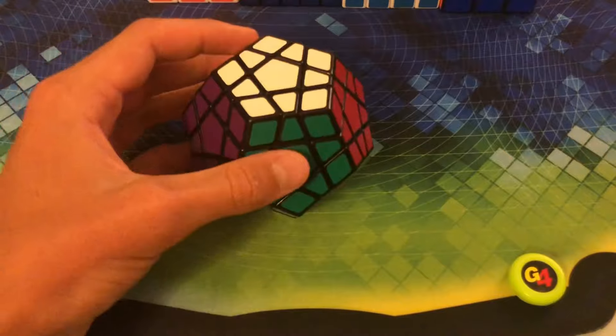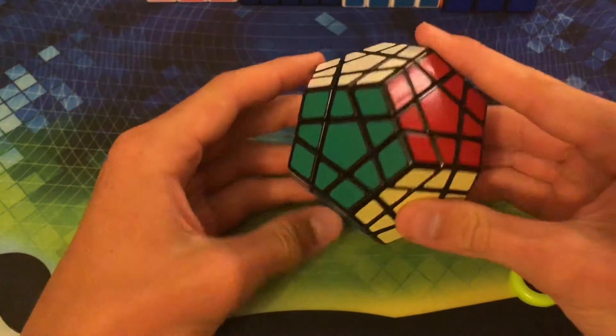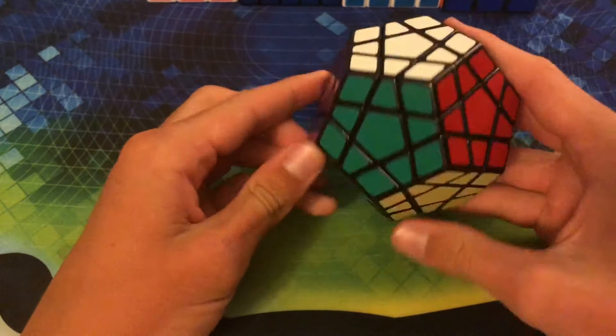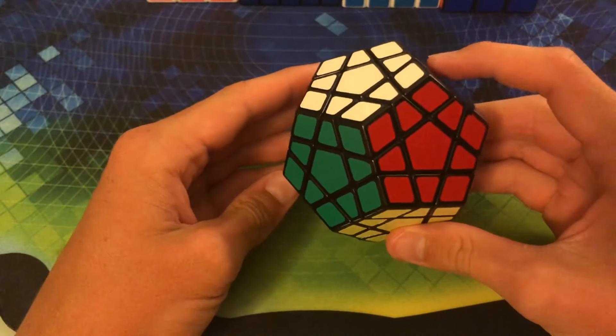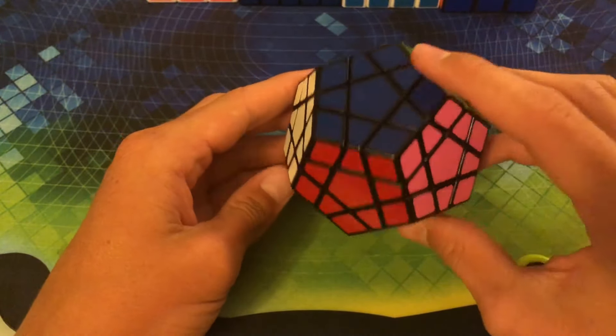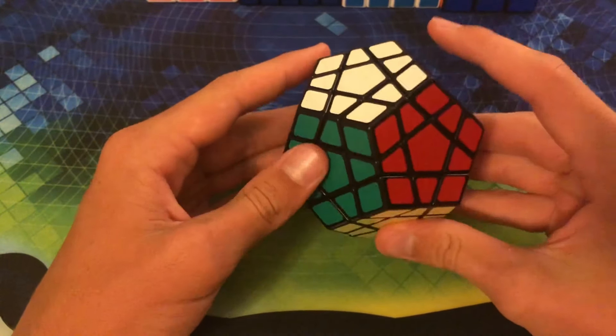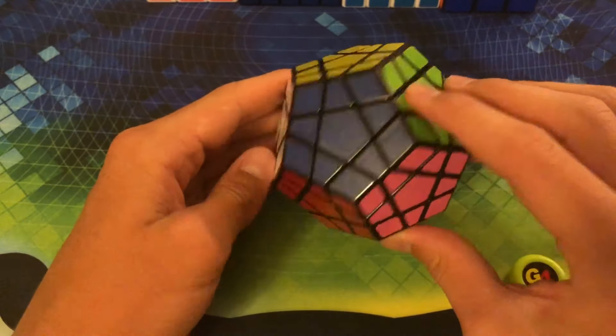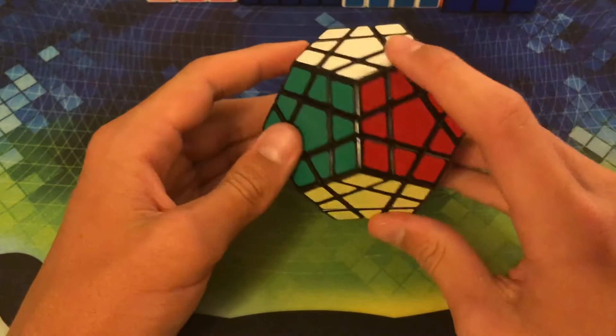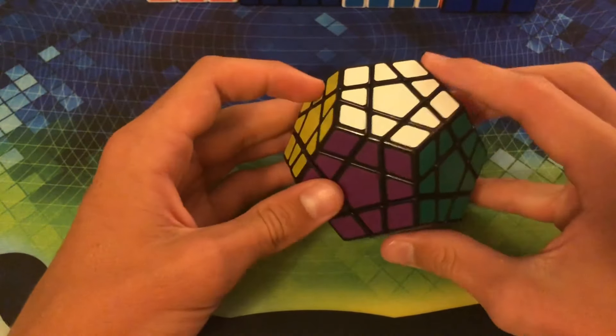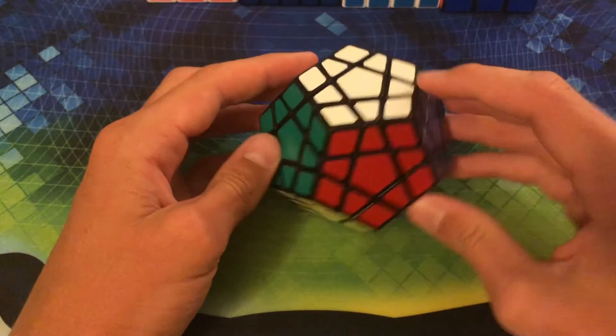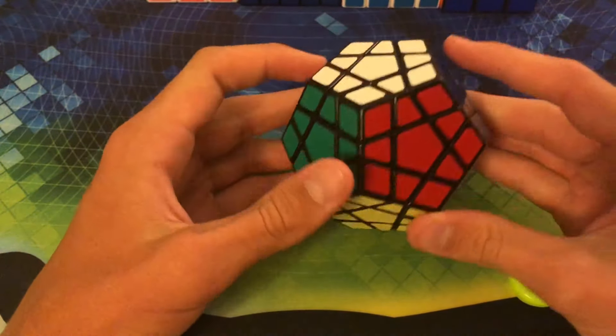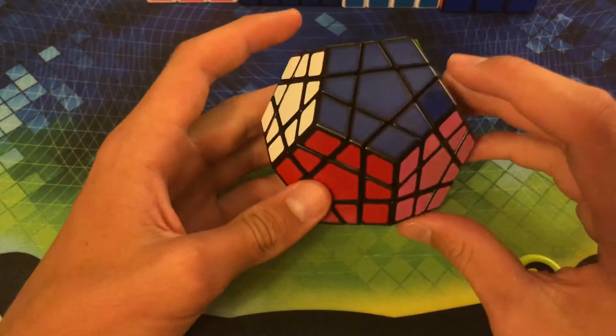We'll start with the fifth oldest cube in my collection, and this is a Shengshou Megaminx. This was gifted to me on Christmas of 2014, so December 2014, and at the recording date of this video it is August of 2019. So it's roughly four and a half years old, maybe a little bit over, but even just by looking at it you can tell this thing has seen better days.